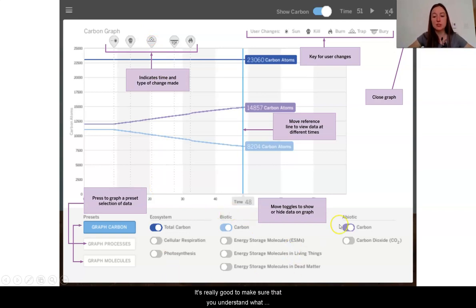It's really good to make sure that you understand what you are wanting to see in the graphical mode before you start analyzing the data. This way, you can only have the things turned on that you want to be studying.